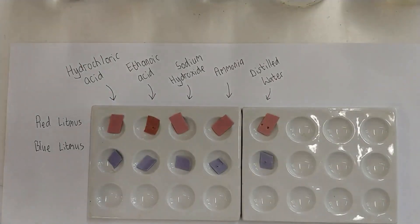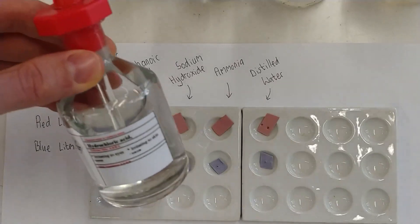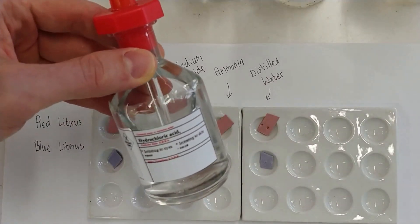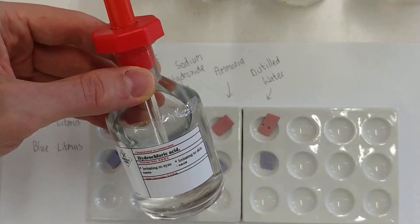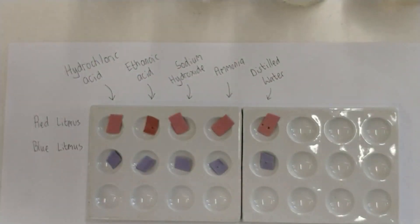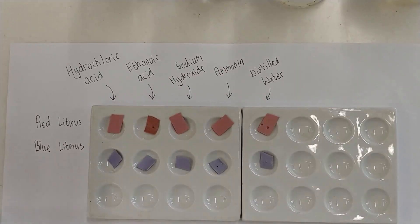Well, that's that. So let's take the hydrochloric acid and we'll use the dropper, dilute hydrochloric acid, I might say, and we'll use the dropper to drop it onto the red litmus paper first.